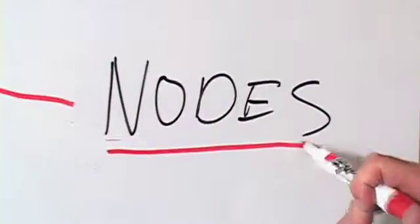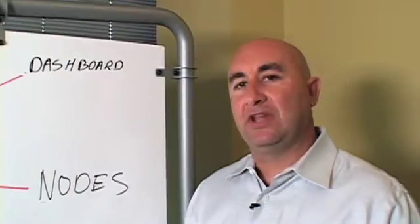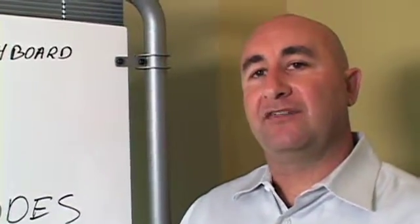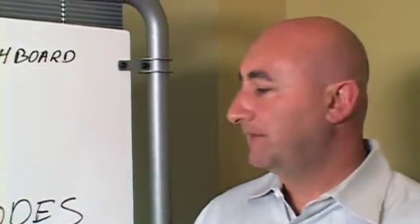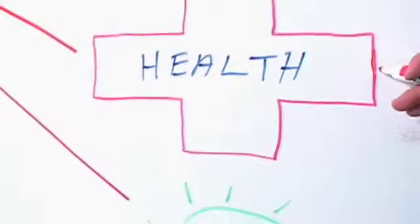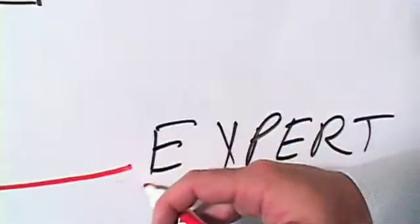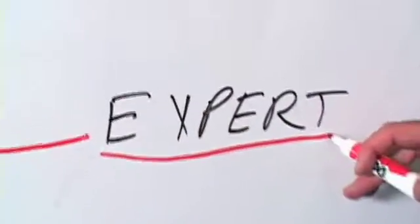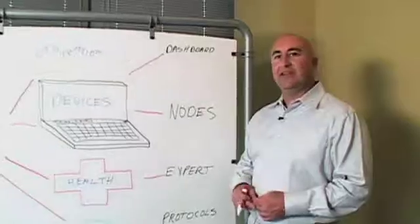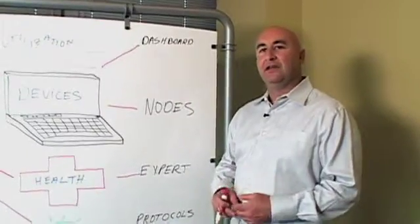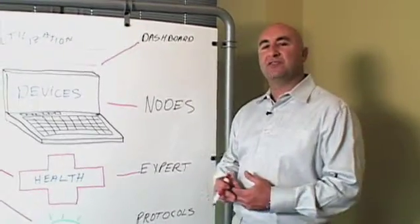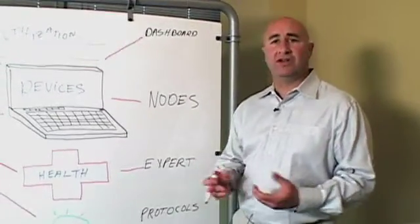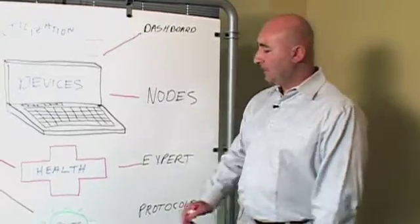The nodes view breaks down individual IP addresses and MAC addresses by the amount of traffic that they're consuming. The health of the network is covered by a section in the product called the expert, which will highlight known expert events — for example, those ARP storms and broadcast storms.